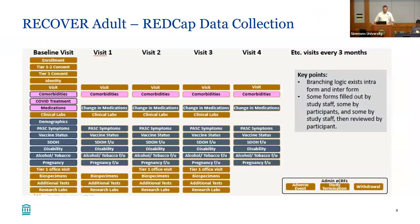This slide describes the high-level view of the RECOVER adult study. This is recruiting over 20,000 participants across about 200 sites, and there is a very complicated longitudinal nature to the study with many different kinds of data collection. The colors here represent whether the data is collected by the study site versus the participants. Some of the purple ones are where the participant completes a survey and the study site confirms it, or vice versa — so there are a lot of different data inputs into REDCap. It's very complicated in terms of a REDCap project.